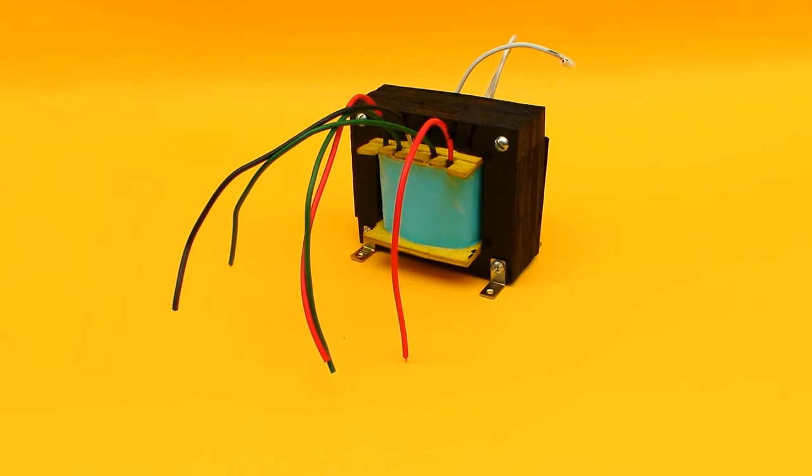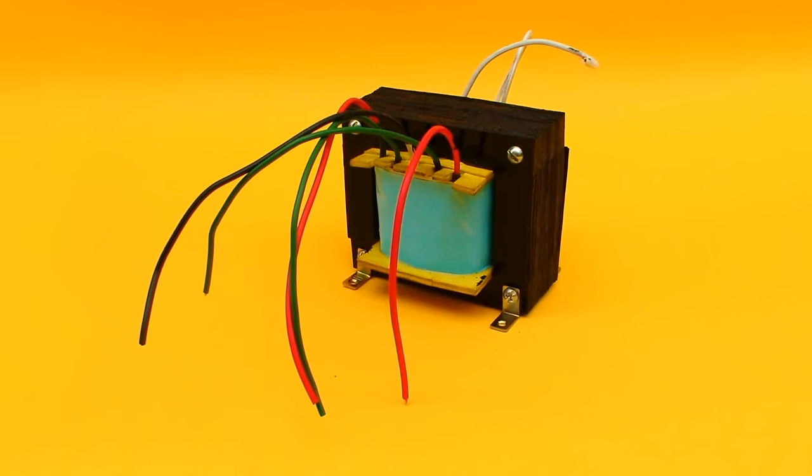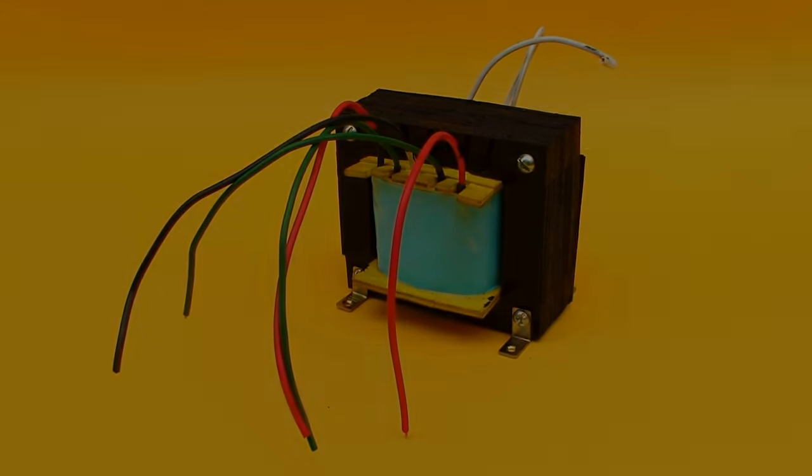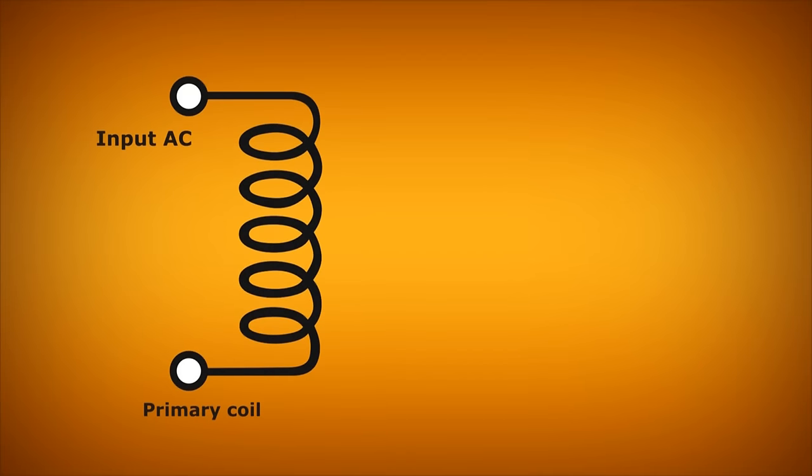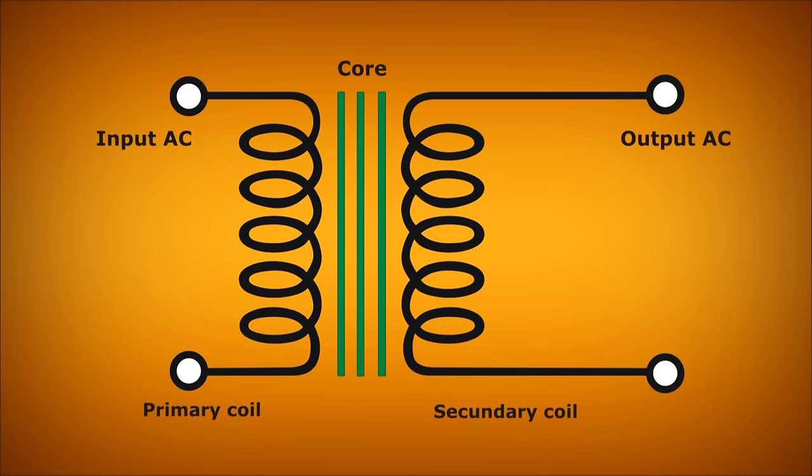A transformer consists of a core of laminated silicon iron on which is wrapped a coil of insulated copper wire called magnetic wire. The first coil receives power from the grid. This coil generates a magnetic field which induces a motion of electrons in the second coil, producing a different voltage and current at the output.